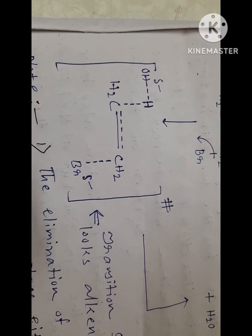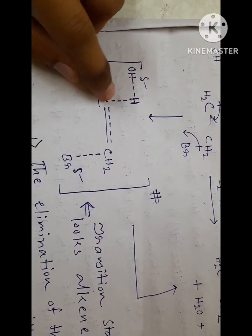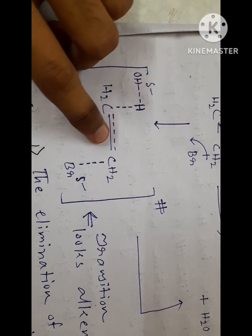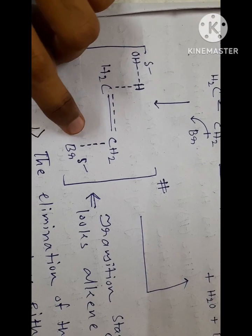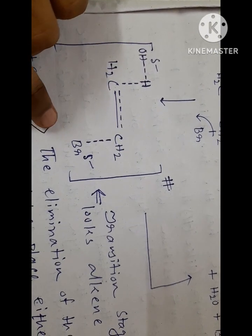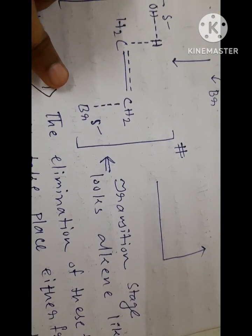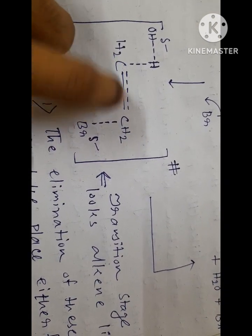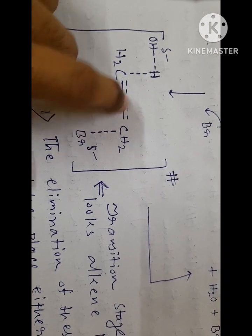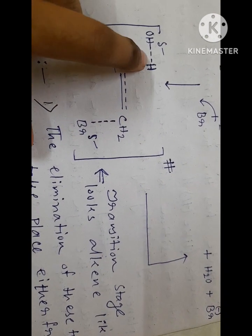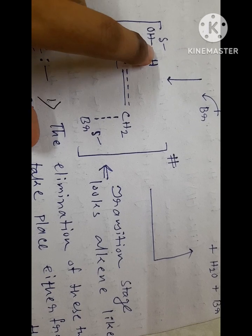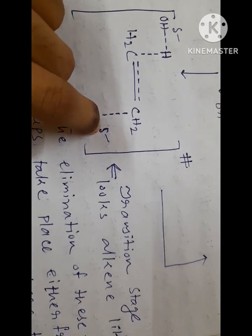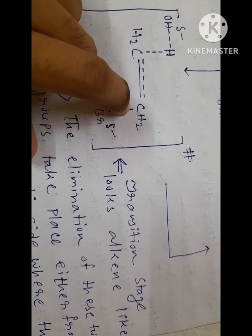And that's the transition state you can see, where this bond gets broken from beta center, this bond formation, and this bond also gets broken. Now this transition state also looks like alkene, isn't it? Because the double bond formation begins from alpha and beta center and the proton abstraction also takes place. That's why this bond gets broken partially and the leaving group is also going to leave from the alpha center. That's why the C-Br bond also gets broken.